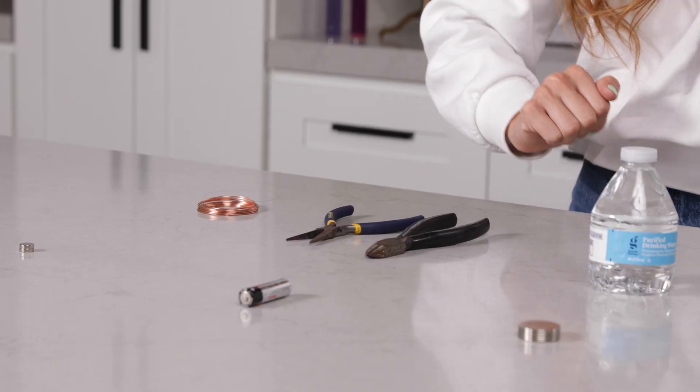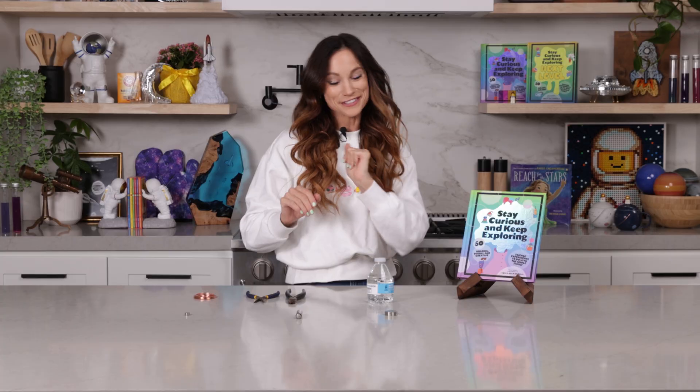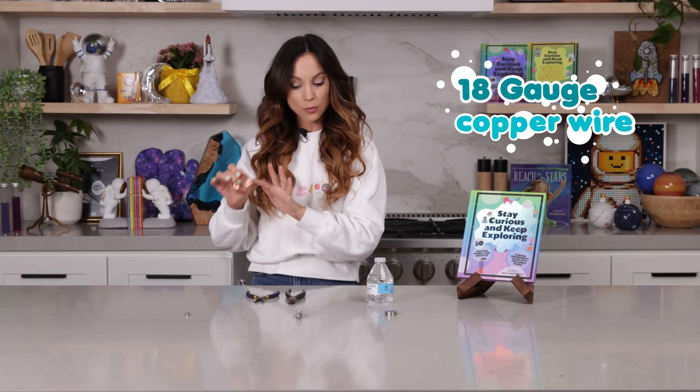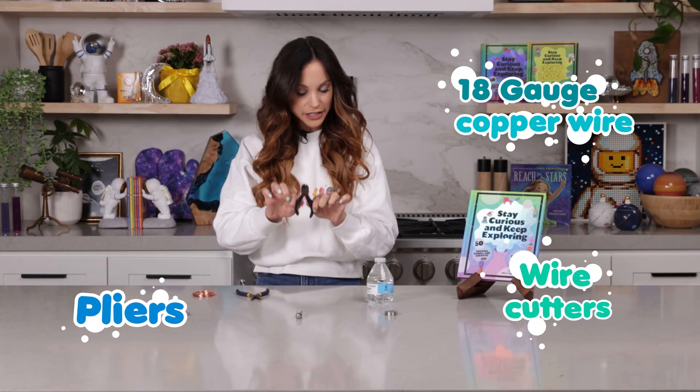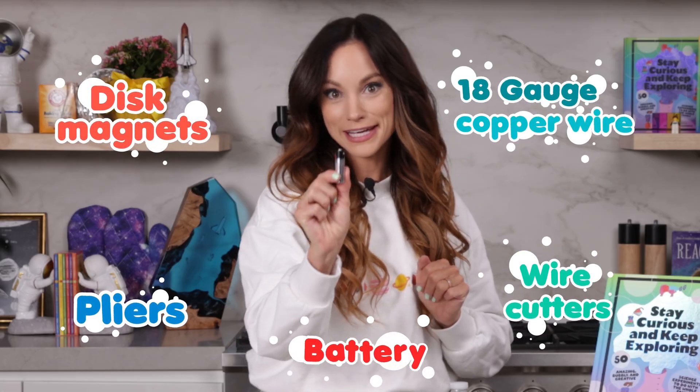Today I'm going to show you how to make a homopolar motor. In my book I call this one twirling dancer and you'll see why in a second. How you make this is you need 18 gauge copper wire, some pliers, wire cutters, disc magnets, and a AA battery.